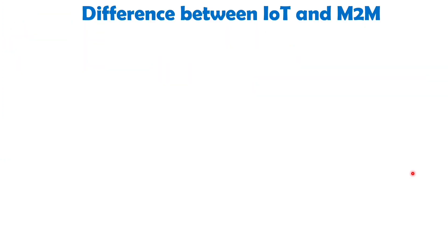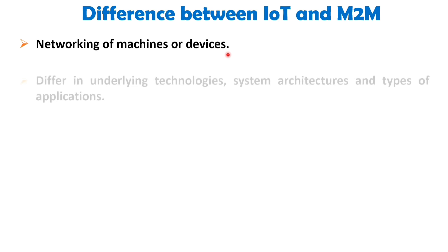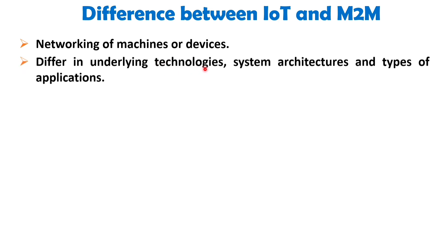First of all, both M2M and IoT involve networking of machines or devices. They differ in the underlying technologies, system architectures, and types of applications used.